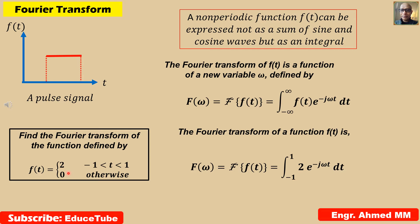In this example, f(t) is defined to be 0 outside the interval t less than 1, so the integral reduces to integral from minus 1 to 1 of 2 e to the minus j omega t dt.